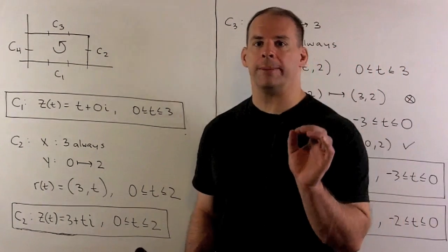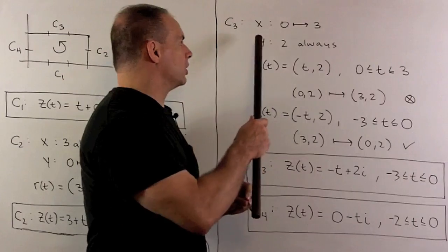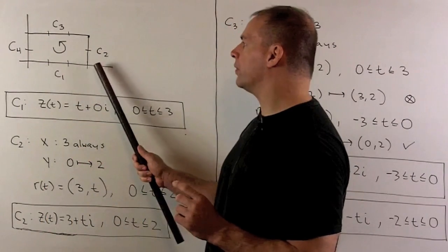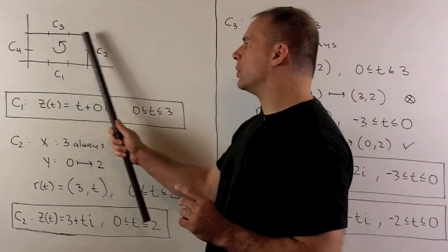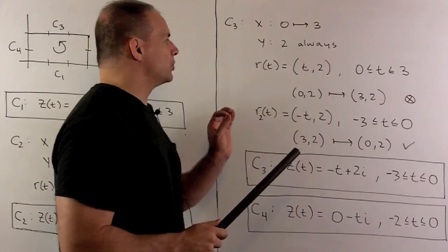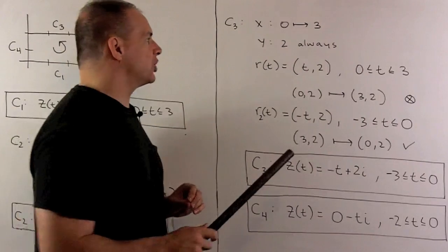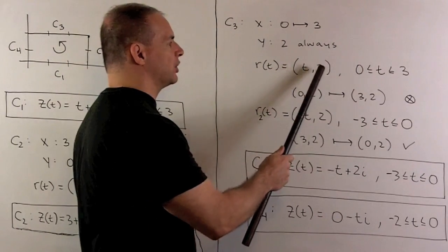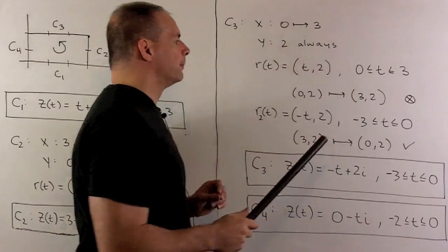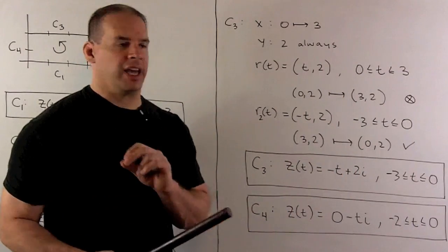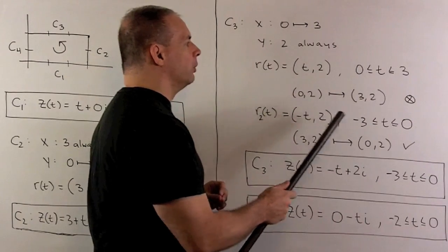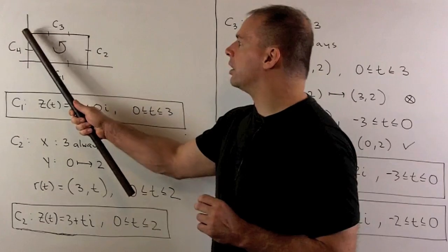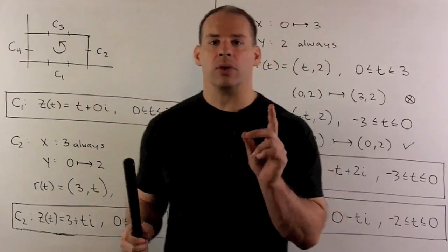Now, for c3, we get something interesting. So let's take a look. So here, we're going to have our x going from 0 to 3. Our y is always going to be 2. So if we use the natural parametrization, the first one that comes to mind, of r of t equals t comma 2, letting t go from 0 to 3. We check the orientation. So I put in 0, I'll have 0, 2. Put in a 3, I'll have 3 comma 2. That's going to take us from here to here. And that's going in the wrong direction.